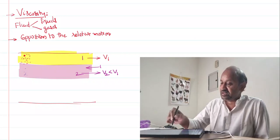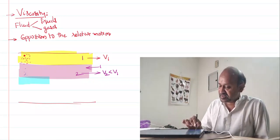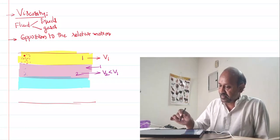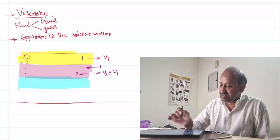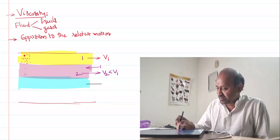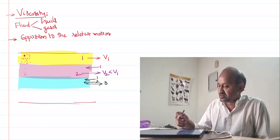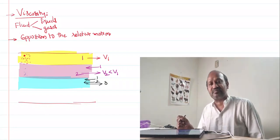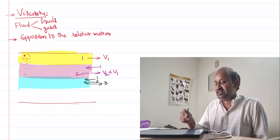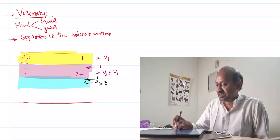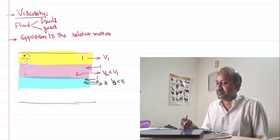Let's come to the third layer of the fluid. While this third layer is moving forward, it experiences opposition due to the first layer and also due to the second layer. So the third layer moves with a velocity even less than that of the second layer — it moves with velocity v3, which is even less than v1.